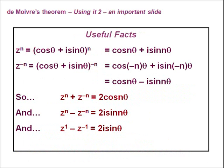For our second example, we need some useful facts. We already know that (cosθ + i·sinθ)ⁿ = cos(nθ) + i·sin(nθ). Replacing n with −n and using the fact that cosine is even — so cos(−nθ) = cos(nθ) — and sine is odd — so i·sin(−nθ) = −i·sin(nθ).